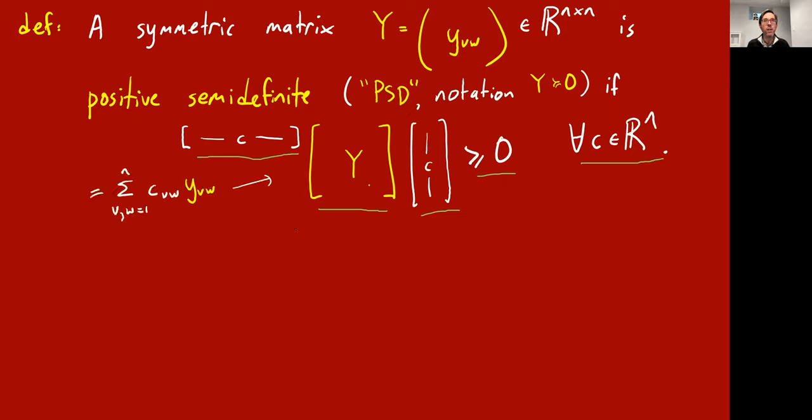And if you just multiply this out in coordinates, c transpose times Y times c is exactly this thing. Sum over vw going from 1 to n of cvw. Sorry, this is a typo. This should say cv times cw. Sum as vw go from 1 to n of cv cw times this matrix entry y_vw. So again, this is infinitely many conditions on a matrix Y for it to be positive semi-definite. But there's gonna be some linear algebra to the rescue that will make it less confusing. So matrices Y that have this property are called positive semi-definite, PSD.